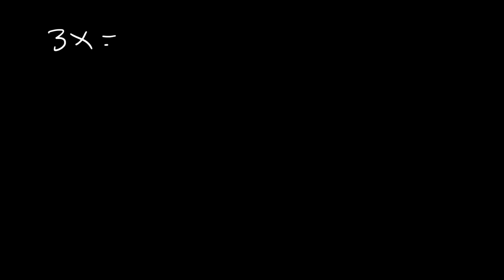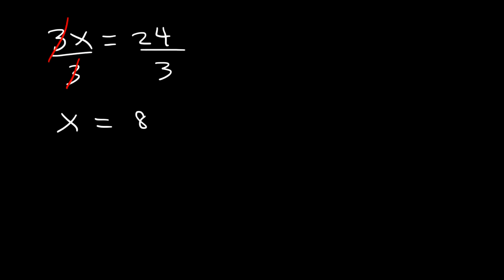What if you were to see an equation like this: if 3x is equal to 24, what is the value of x? The opposite of multiplication is division. Since 3 is multiplied to x, we divide both sides by 3. 3 divided by 3 is 1, so we get x, and 24 divided by 3 is 8. So x is 8. And it makes sense because 3 times 8 is indeed 24.